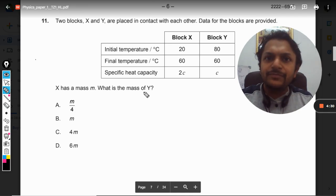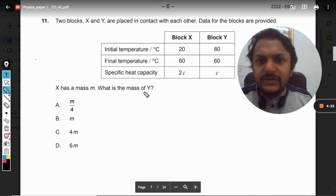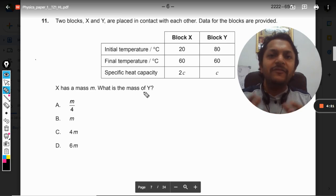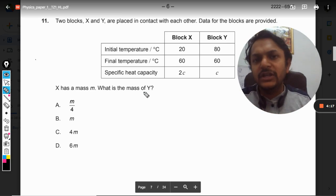Now what is the principle of calorimetry? The principle is the heat lost by one body should be equal to the heat gained by the other body, because we do not consider loss in energy.